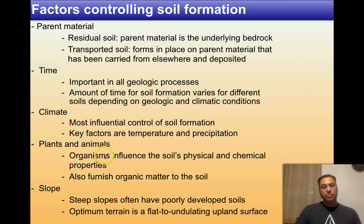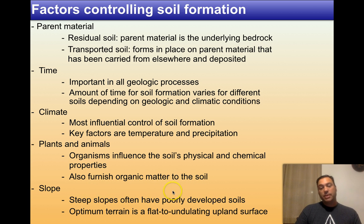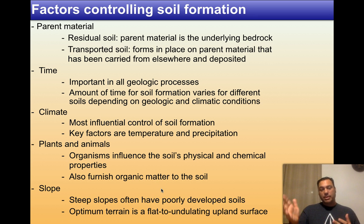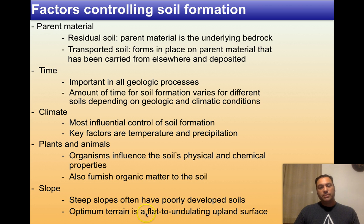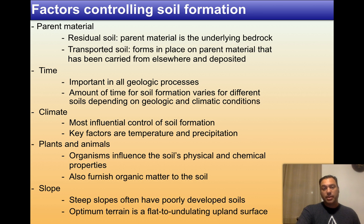Plants and animals have a huge role to play. Organisms influence the soil's physical and chemical properties and furnish organic material to the soil. Steep slopes have poorly developed soils because whenever the water comes, it washes them right off. The optimal terrain is a flat to undulating upland surface — you can think of the Great Plains of the United States that way. There are also areas in Central Asia that are quite good in this regard.